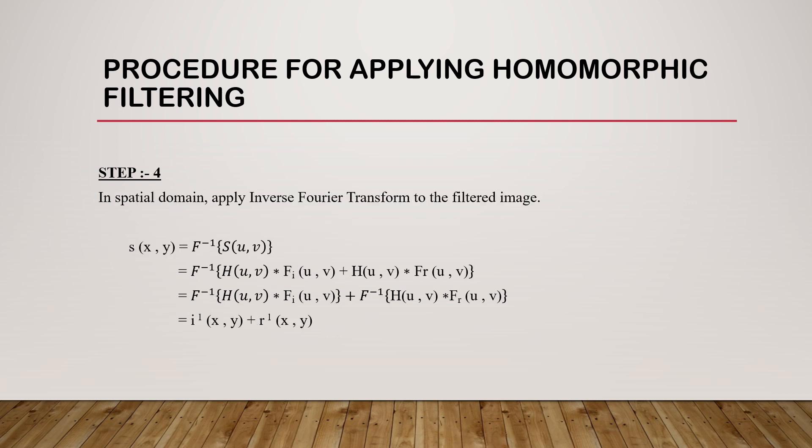In the next step, in the spatial domain, apply inverse Fourier transform to the filtered image. s(x,y) = F^(-1){S(u,v)} which is equal to F^(-1){H(u,v)*Fi(u,v)} + F^(-1){H(u,v)*Fr(u,v)} which is equal to i'(x,y) + r'(x,y).